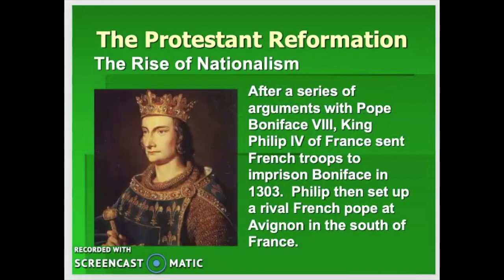As an example of nationalism, King Philip IV of France — known as Philippe le Belle or Philip the Beautiful — and the Pope were having an argument over the taxation of Catholic property in France. For most of the Middle Ages, Catholic property had been off limits for taxation. But there was a war going on with the English that Philip needed money for, so he decided to impose a small tax on Catholic property. The Pope said absolutely not and threatened excommunication.